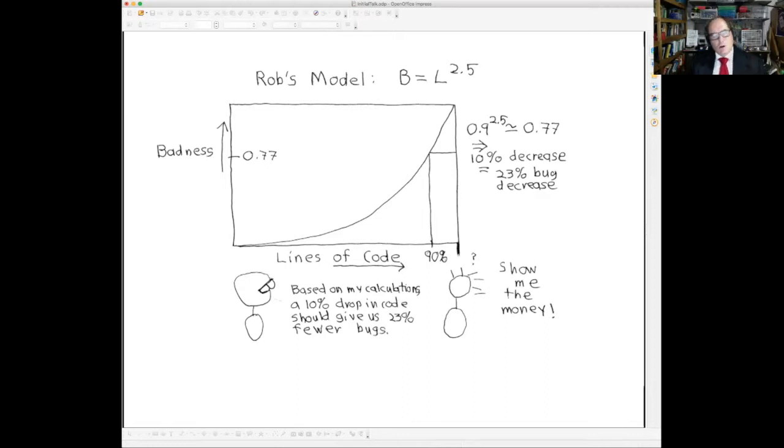No one else knows about this or agrees with this to describe the badness of a software system. So in this chart, the higher you go, the worse the system is. So the badness is the vertical level and the number of lines of code is the horizontal level. And I assert that the badness of a system is equal to the number of lines of codes raised to the power 2.5. So it's worse than the square of the number of lines of code, but not as bad as the cube of the number of lines of code.